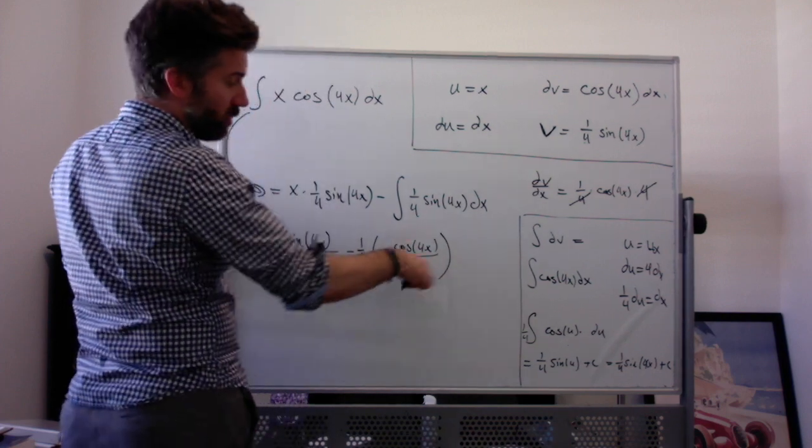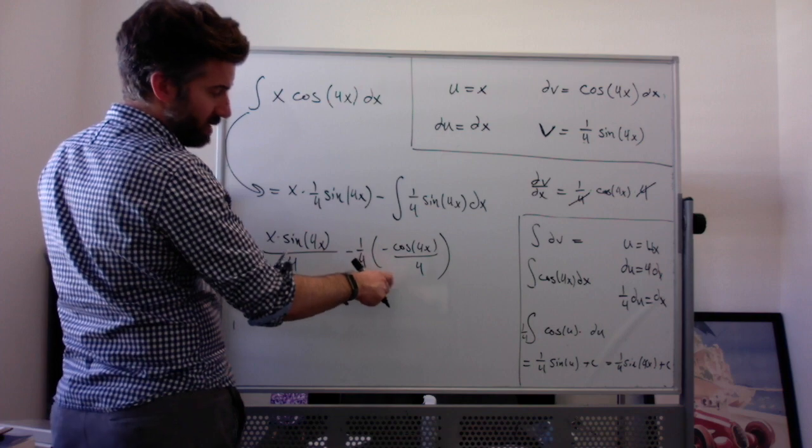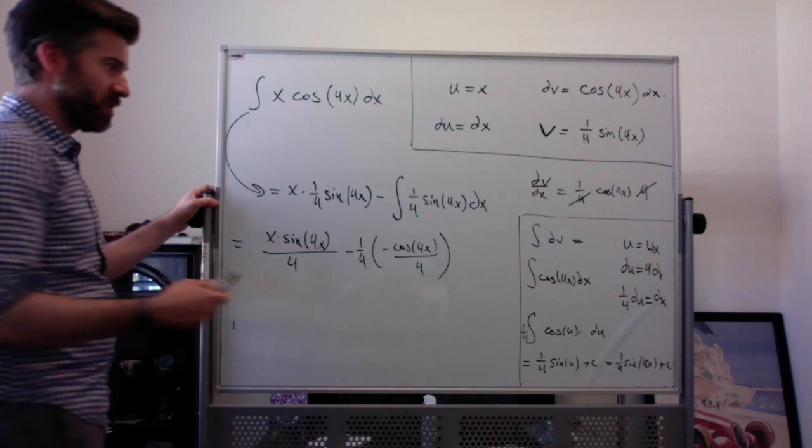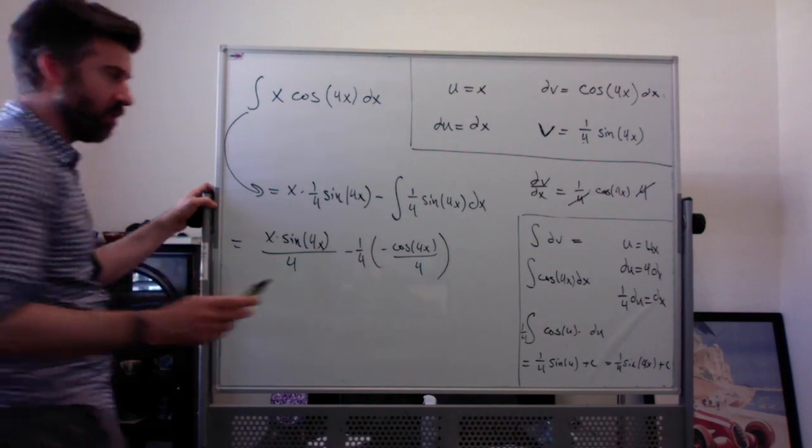Again, the derivative of negative cosine of 4x all over 4 is positive sine of 4x times 4, and the times 4 divides the 4 there. So we're just kind of undoing the chain rule in a very small way.